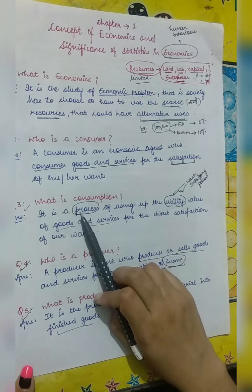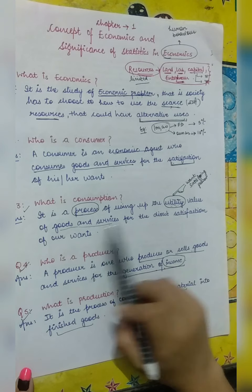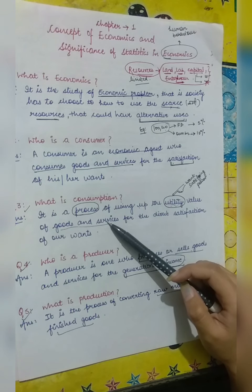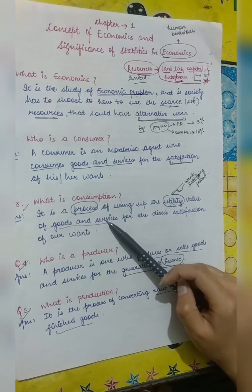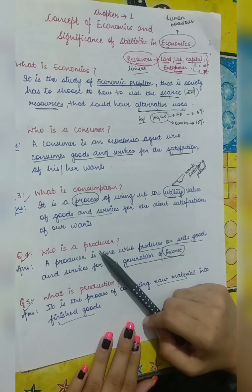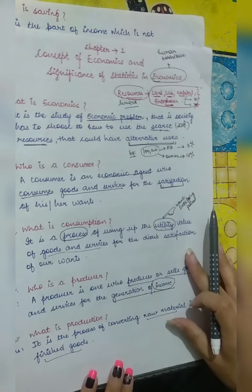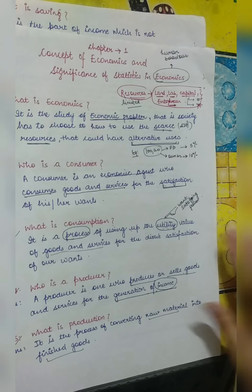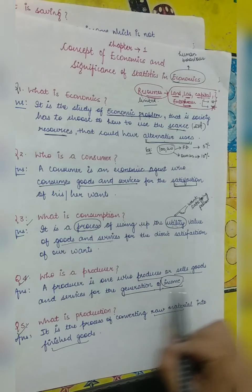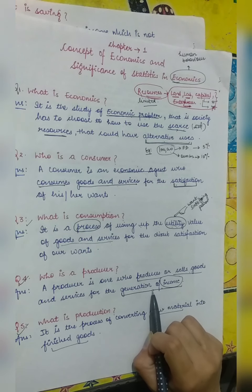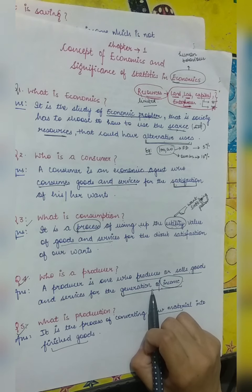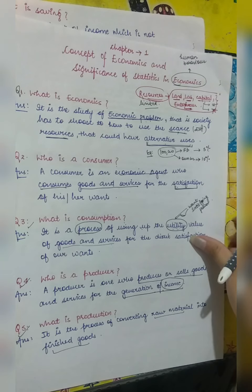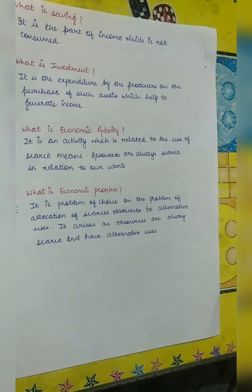Next, what is consumption? Consumption is a process in which we consume goods and services to get satisfaction. The process of consuming goods and services is called consumption. After that, who is a producer? A producer is one who produces or sells goods and services for the generation of income. And production is the process of converting raw materials into finished goods.